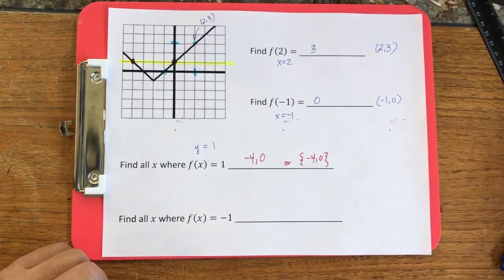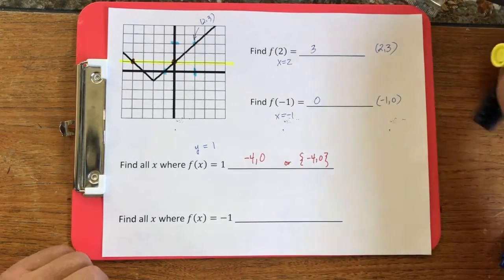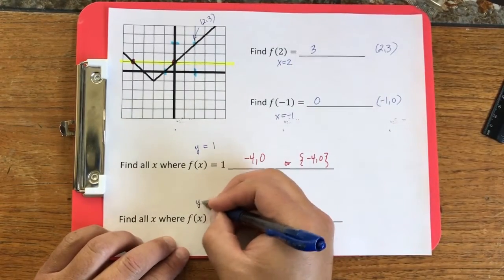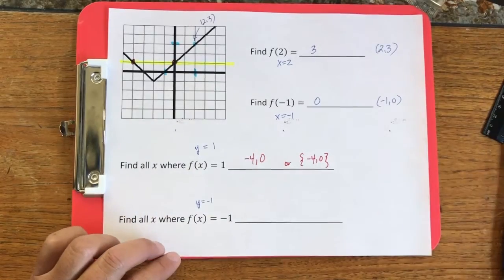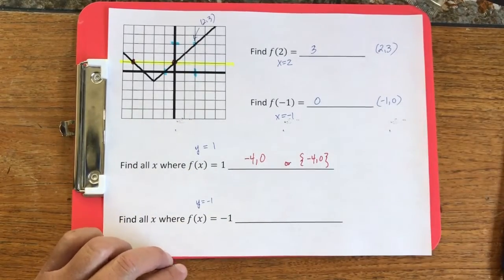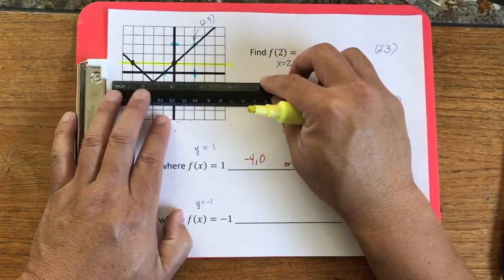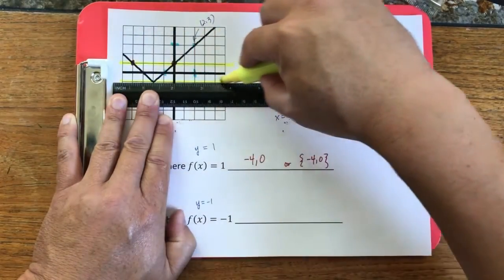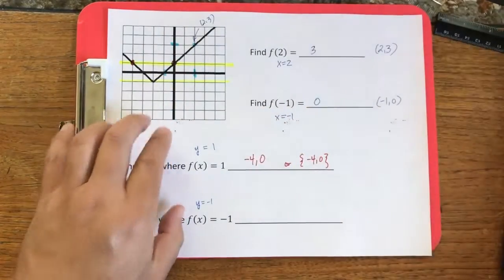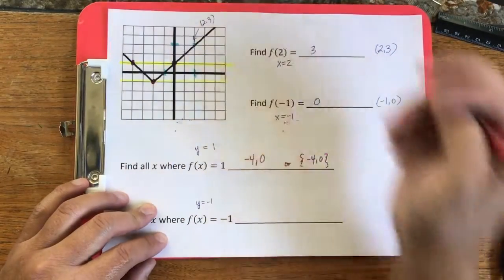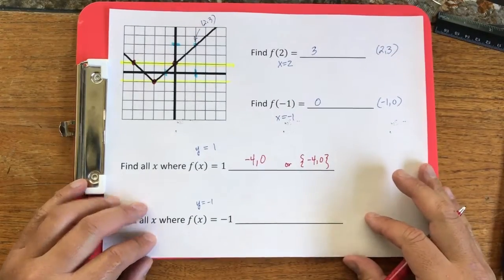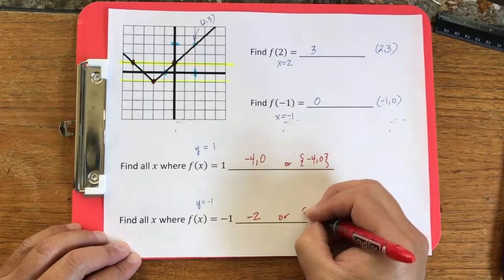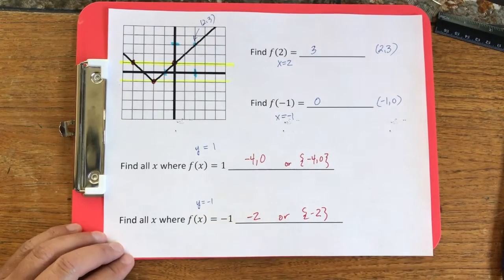Over here we're asking for when does y equal negative 1? So y equal to negative 1 looks like this. And it hits the graph at this point. And my x value for that point is negative 2, or you can write it as negative 2. Okay, thank you.